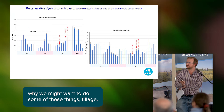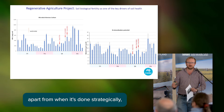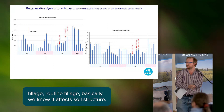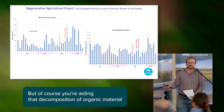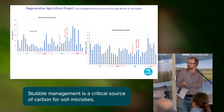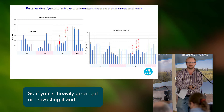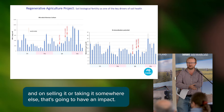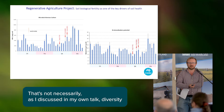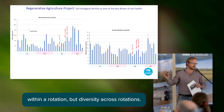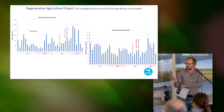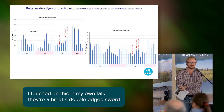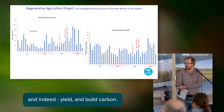Looking at why we might want to do some of these things: tillage, apart from when done strategically to overcome specific constraints, affects soil structure. It does alter nitrogen mineralization through aiding decomposition of organic material, but you're aiding that decomposition probably at a rate quicker than you're building it. Stubble management is a critical source of carbon for soil microbes - if you're heavily grazing it or harvesting it and taking it somewhere else, that's going to have an impact. Crop diversity - not necessarily within a rotation but across rotations, building in legumes rather than wheat-wheat-wheat-canola-wheat - builds resilience. Fertilizers are a double-edged sword when trying to balance microbial activity, yield, and carbon building.